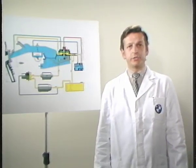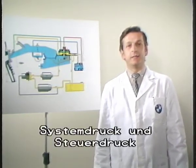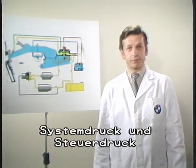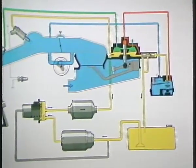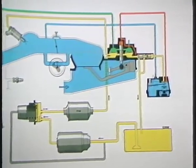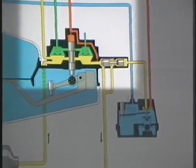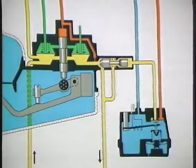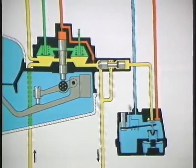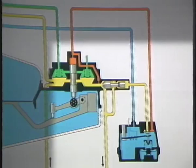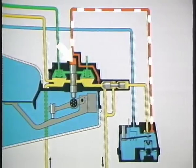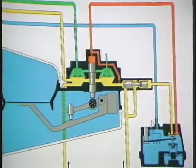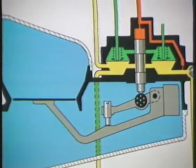Bei der K-Jetronic unterscheiden wir zwei Druckkreise: den Arbeitsdruck bzw. den Systemdruck und den Steuerdruck. Der Systemdruck wird von der elektrischen Kraftstoffpumpe erzeugt und vom Systemdruckregelventil im Mengenteiler geregelt. Der Kraftstoff für den Steuerdruckkreis wird vom Systemdruck abgenommen und die Höhe des Drucks vom Warmlaufregler bestimmt. Der Steuerdruck über dem Steuerkolben bildet die Gegenkraft zur Luftkraft an der Stauscheibe und bestimmt in Abhängigkeit der Stauscheibenstellung die Gemischzusammensetzung.